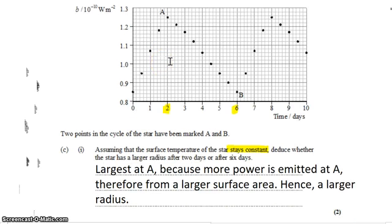But the maximum luminosity is tied to the maximum apparent brightness. When the star is brightest, it appears brightest.